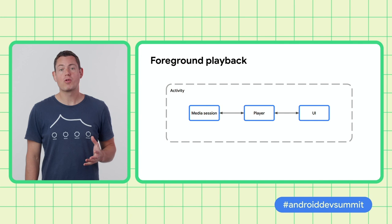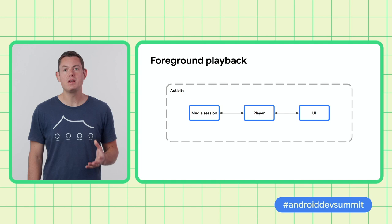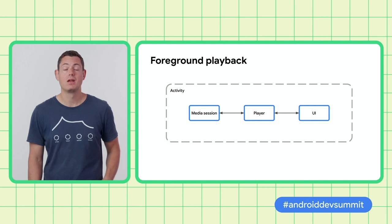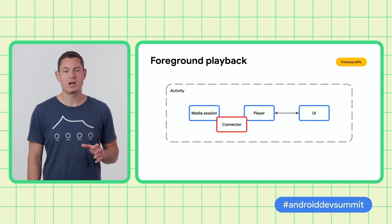Starting with the simplest use case — foreground playback. If your app just plays content when it's in the foreground, for example a simple video player, then your player, UI, and media session are all contained within a single activity. In this case, the media session allows you to support media key events and display controls when in picture-in-picture mode. The problem with this approach is that with the previous APIs, the media session cannot communicate directly with the player. It means you have to have a connector object which translates commands and callbacks between the player and the media session.